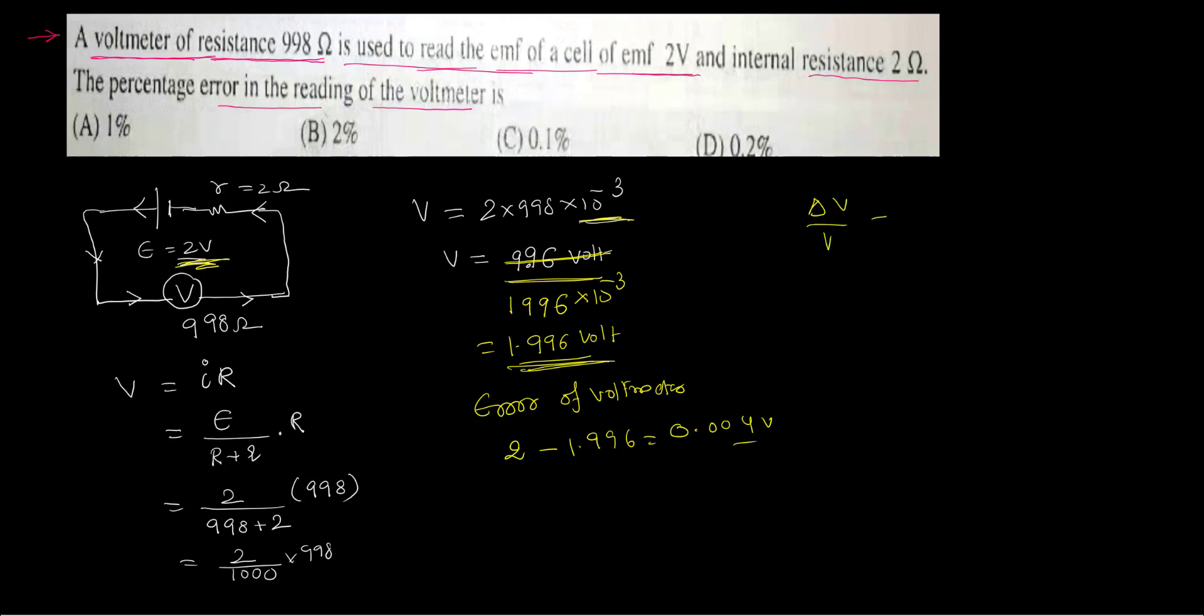Delta V by V is 0.004 by 2. That's a fractional error, and if you want percentage, 0.004 by 2 times 100 has to be done. That is 0.002 times 100. That is 0.2 percent.